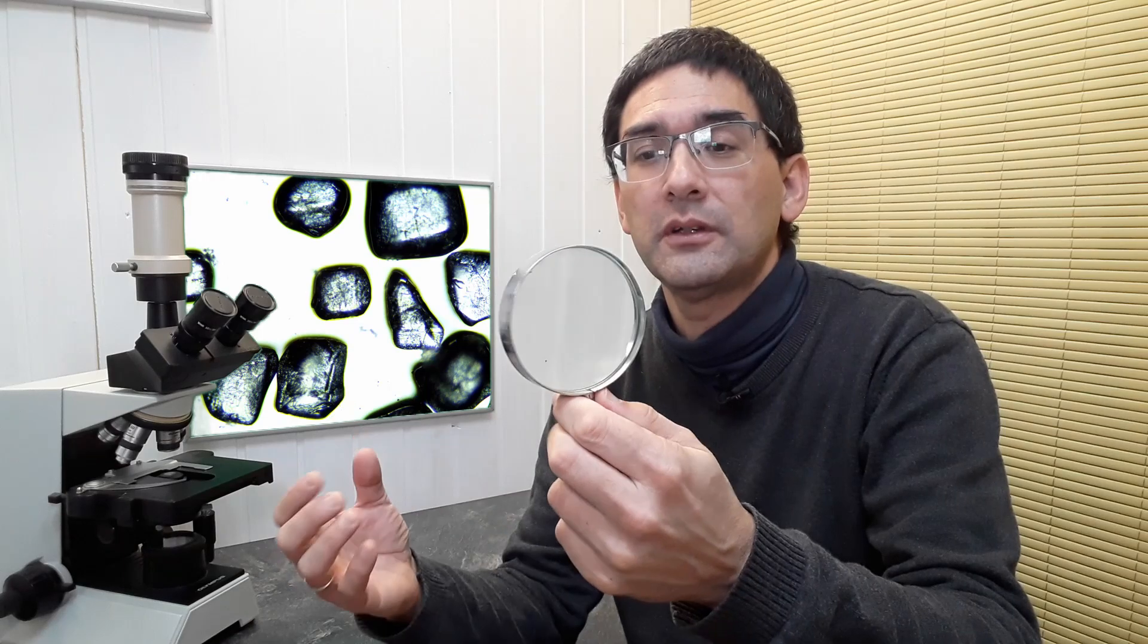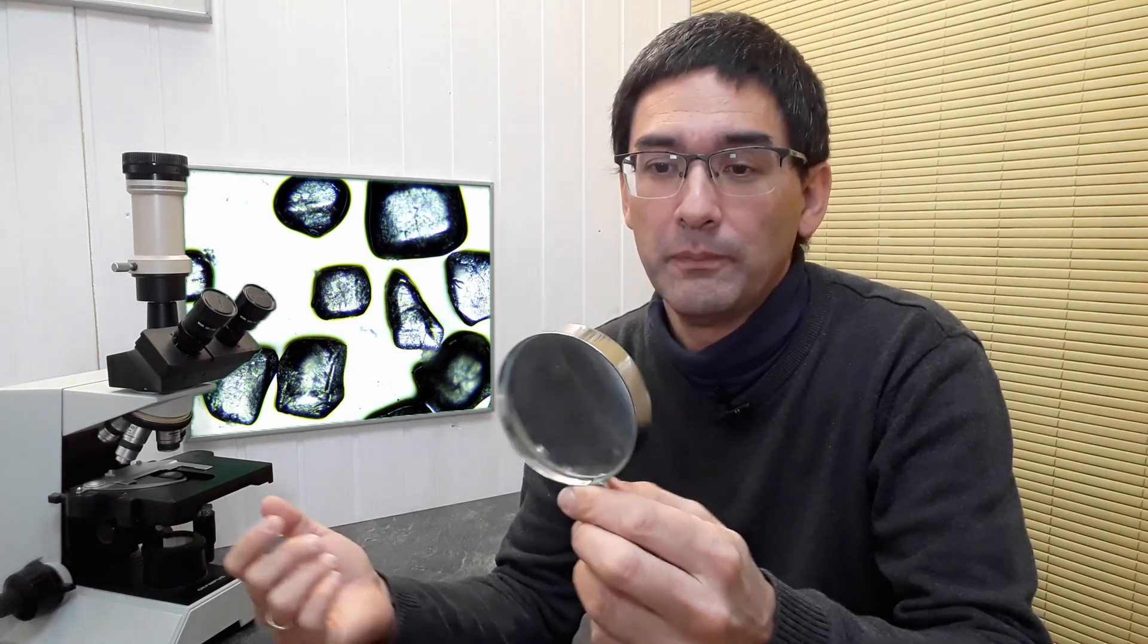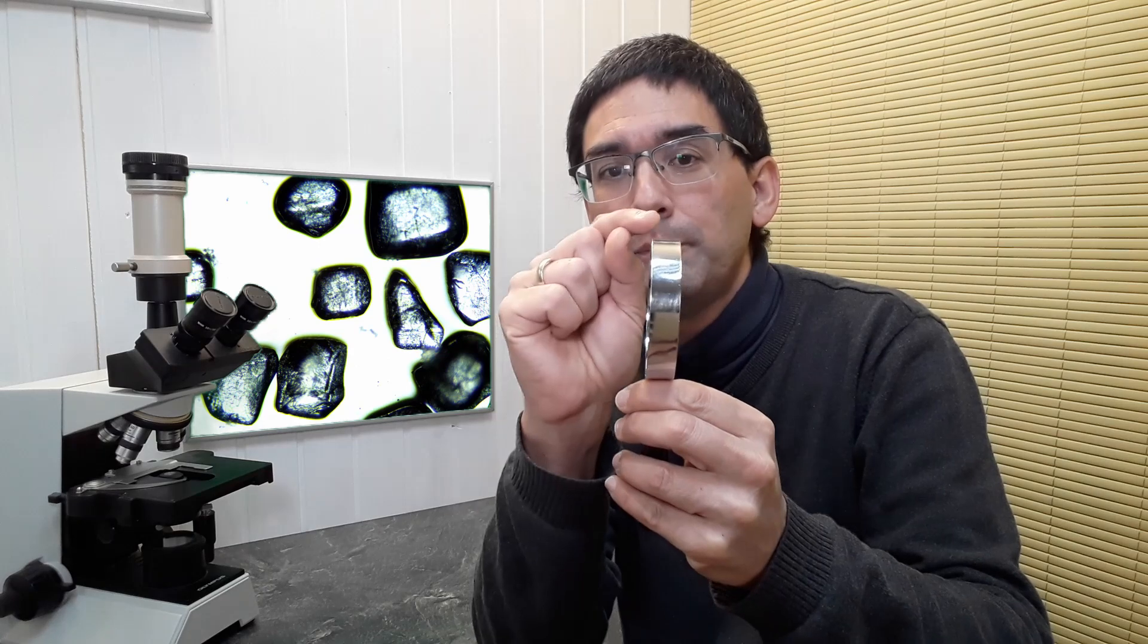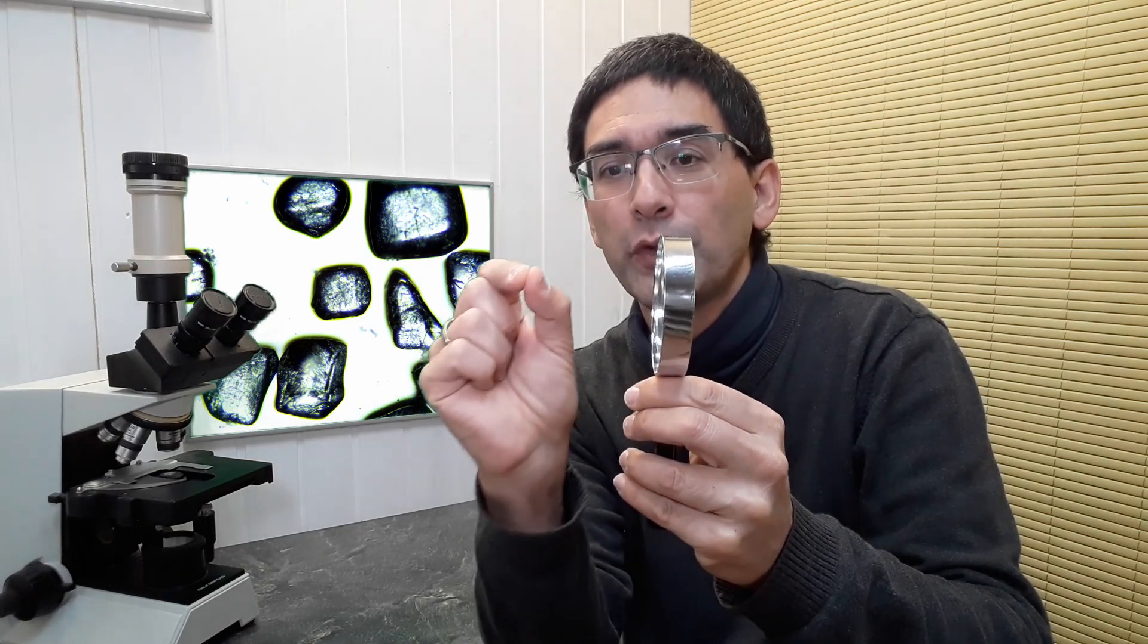First of all, important for you to understand is that a lens like this is not an ideal system. The problem is that white light that goes through the lens, the different colors of the white light will be refracted differently.